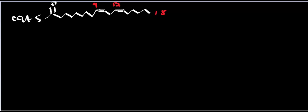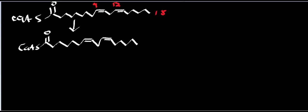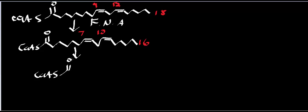I want to figure out exactly how much of everything we're going to get from this. I'll abbreviate FADH2 as F, NADH as N, and acetyl-CoA as A. In one round of beta-oxidation, I'm going to shorten by two carbons, so the double bond at carbon 9 is now going to be at carbon 7. So now this double bond is at carbon 7, carbon 10, and carbon 16. I generate an FADH2, NADH, and acetyl-CoA.